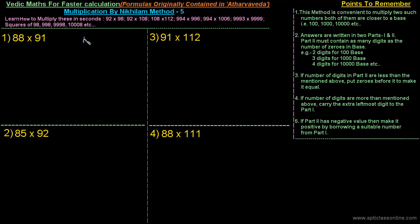The first thing we have to check is the base. The base for this multiplication is 100 because both these numbers are closer to 100. The next thing we'll do is check the first number.